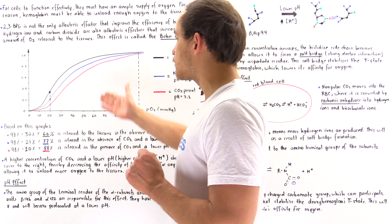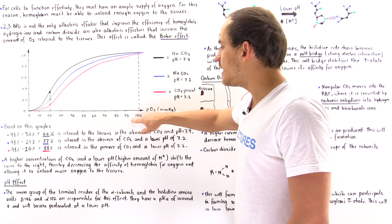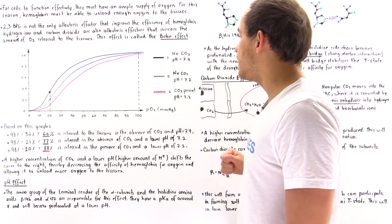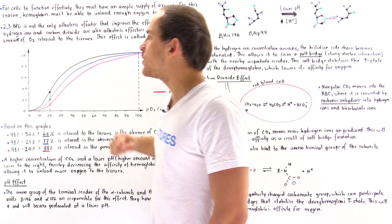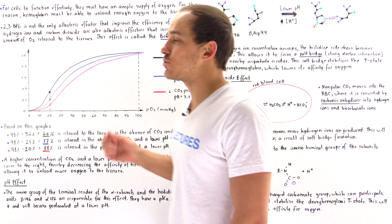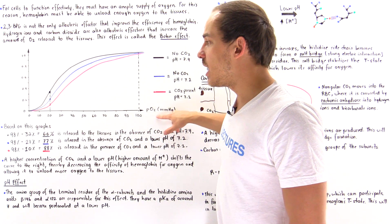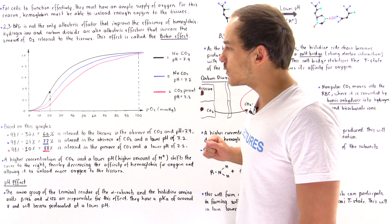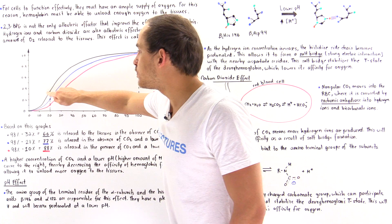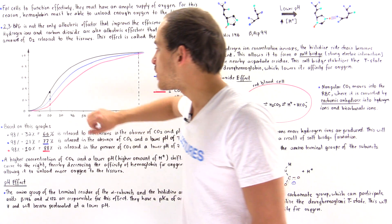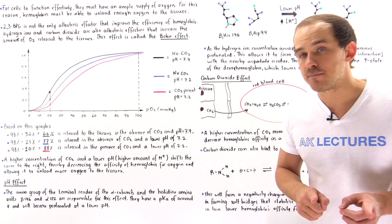Let's look at how much more oxygen is actually released. Inside the lungs, at about 100 mmHg of oxygen, all three curves share a y-coordinate of about 0.98, equivalent to 98% saturation. In the exercising tissues, where oxygen concentration drops to about 20 mmHg, the three curves diverge: the black curve gives a y-coordinate of about 0.32, the blue curve about 0.21, and the red curve about 0.10.